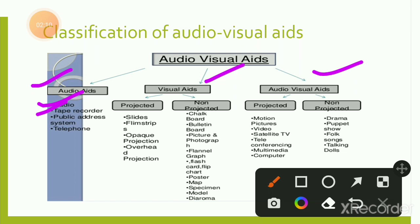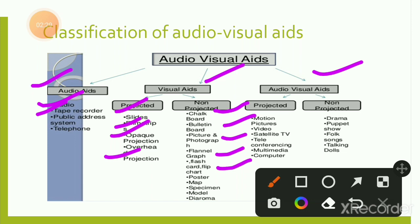Visual aids are divided into projected and non-projected. Projected visual aids include slides, filmstrips, opaque projection, and overhead projection. Non-projected visual aids include chalkboard, bulletin board, pictures and photographs, flannel graph, flash cards, flip charts, poster maps, specimens, models, and drama.